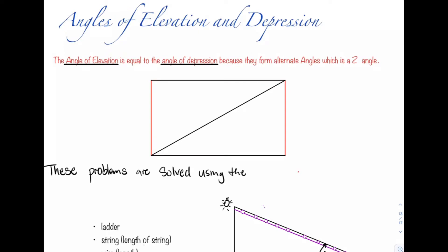What you are to take away from this video is that the angle of elevation is equal to the angle of depression because they form alternate angles, which are also referred to as Z angles.